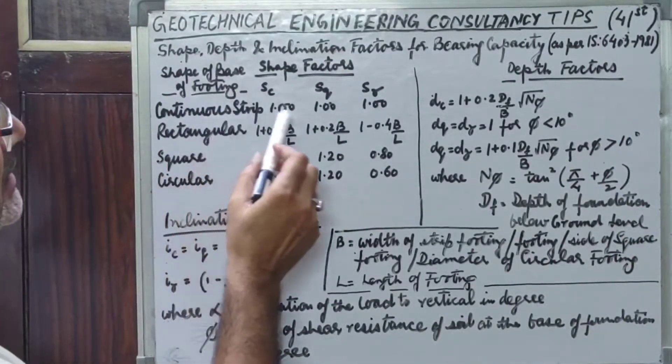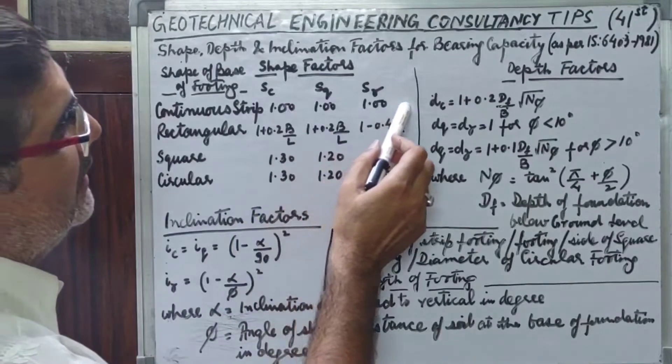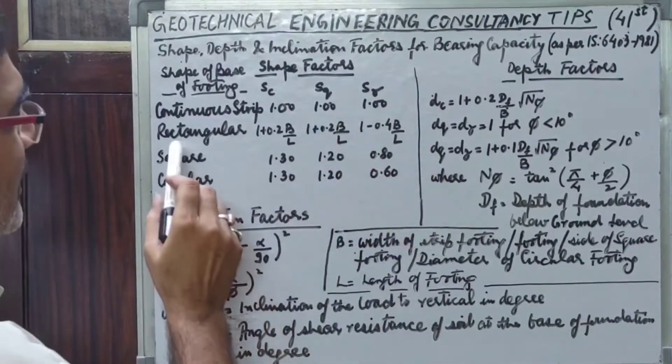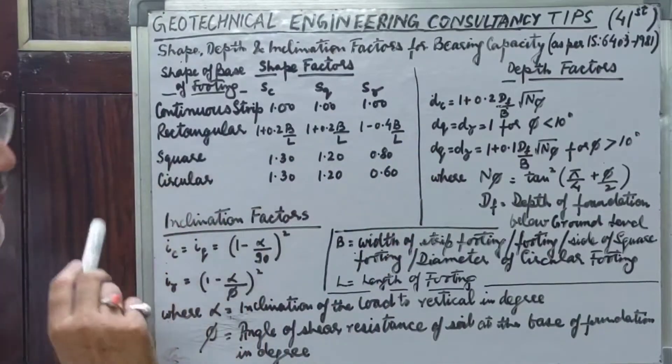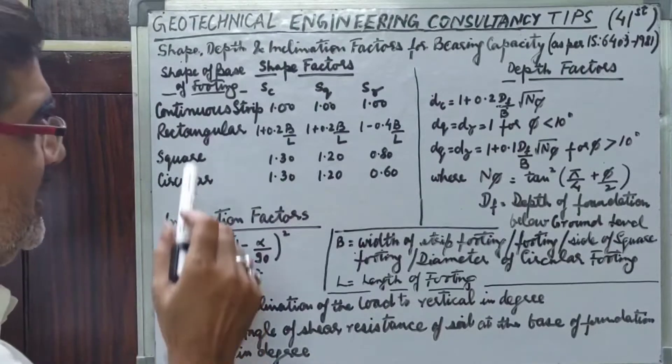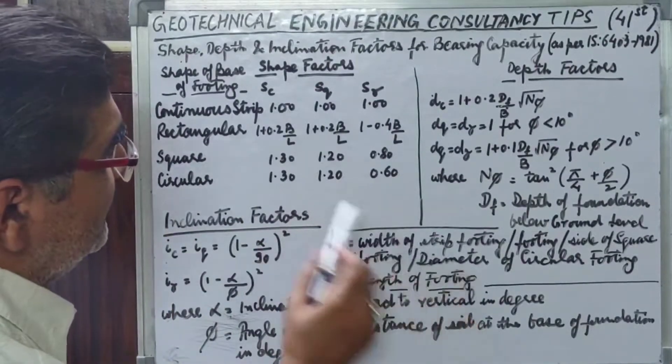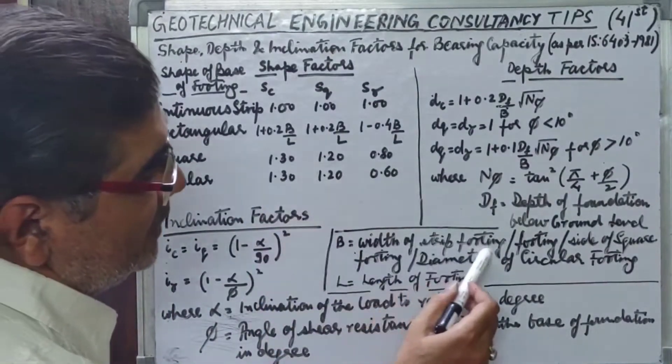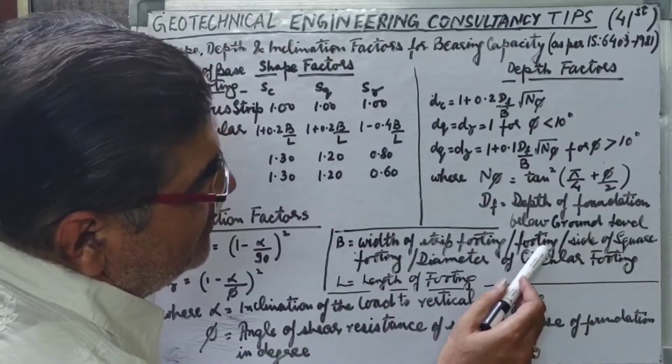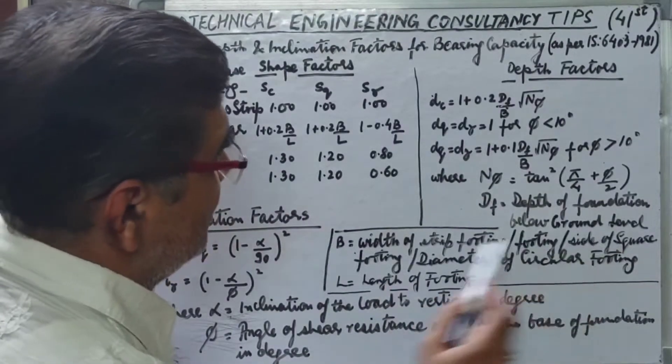For continuous strip footing, Sc, Sq, S gamma are all equal to 1. For any rectangular footing assumed for bearing capacity calculation purposes, L is the length of the footing and B is the width of strip footing or any footing, may it be square or circular, that is the side of the square footing or the side of the rectangular footing.